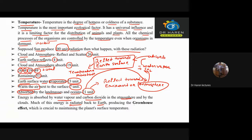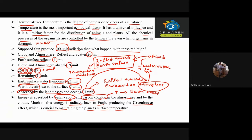This process is called the Greenhouse Effect. This is crucial to maintain the planet's surface temperature. If, due to human activity, the water vapour and carbon dioxide concentration is increased, then what will happen to our Earth's temperature? Earth's temperature will increase.